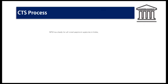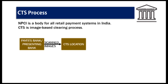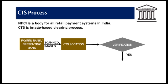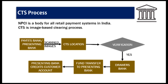CTS is an image-based clearing process. Instead of manually presenting the checks, the presenting bank sends images of checks to the CTS location for verification of information. CTS locations are managed by NPCI — the National Payments Corporation of India — which is the body for all retail payment systems in India. The checks are verified for the signature, the information therein, signature validation, and whether there is a balance in the account of the issuer. Once verification is done, the check is marked as cleared in the system. The payer's — that is the drawer's — bank then pays the funds to the payee bank, which is the presenting bank. Once the funds are received by the presenting bank, they will credit the customer's account with these funds.